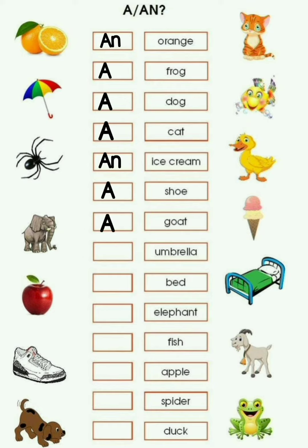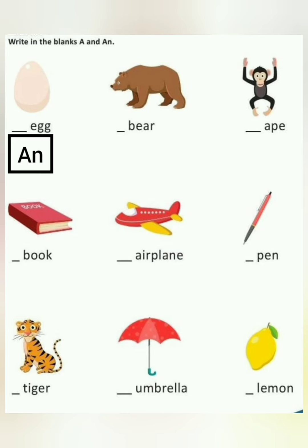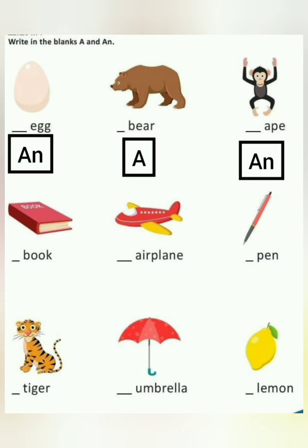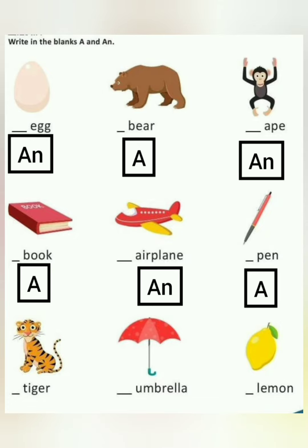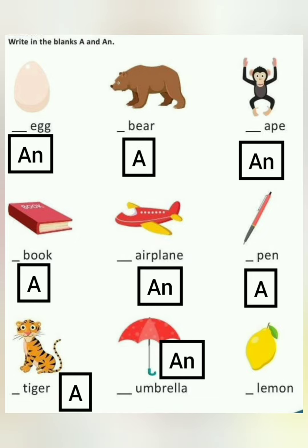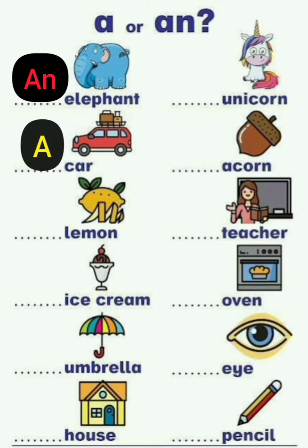A goat, an umbrella, a bed, an elephant, a fish, an apple, a spider, a duck, an egg, a bear, an ape, a book, an airplane, a pen, a tiger, an umbrella, a lemon, an elephant, a car.